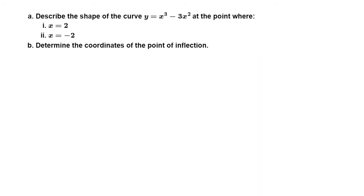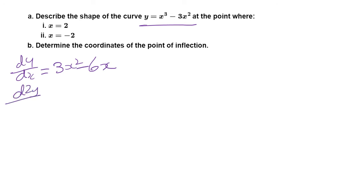Let's do an example together. I've given you a curve y = x³ − 3x², and I want you to describe the shape of the curve at x = 2 and x = −2 — that is, whether it is concaving up or concaving down at those two points. To find that, we need to find the second derivative. So let's differentiate once: dy/dx = 3x² − 6x. Then d²y/dx² = 6x − 6.